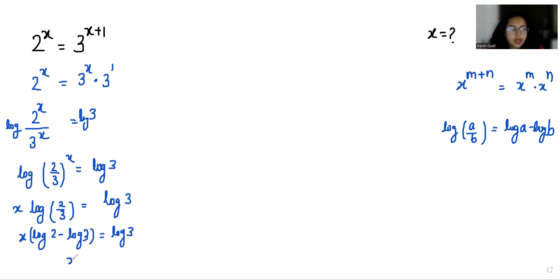So x is equals to log 3 by log 2 minus log 3. The value of log 3 and log 2: log 2 is equals to 0.3010 while log 3 is equals to 0.4771.